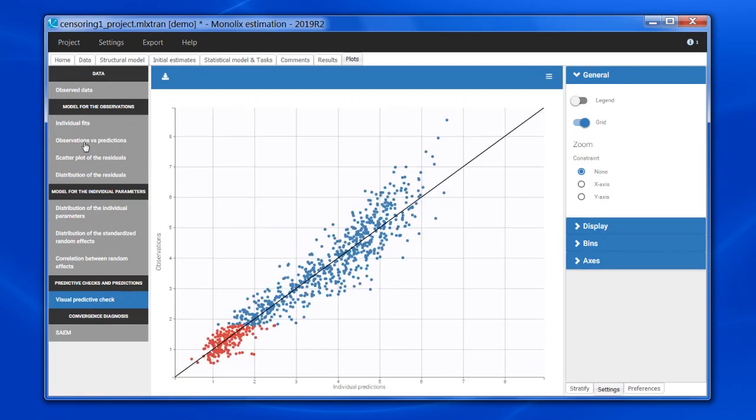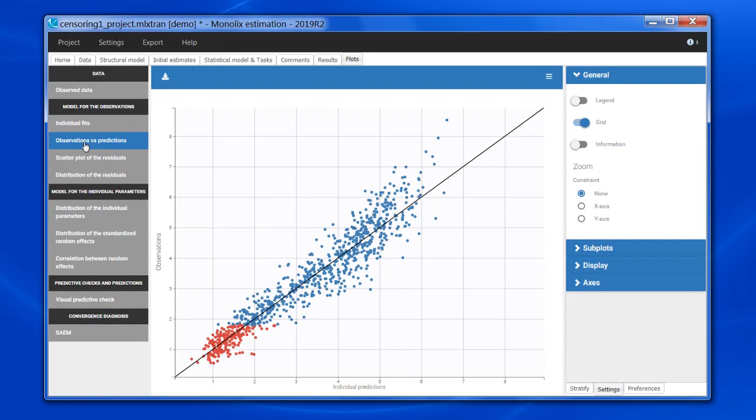Let's focus on the obs vs. pred. In this plot, on the prediction x-axis, it is easy to get the prediction value at the time of the BLQ. The question is what to plot on the observation axis, as we have no precise measured value.